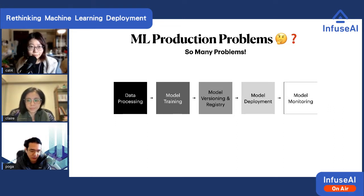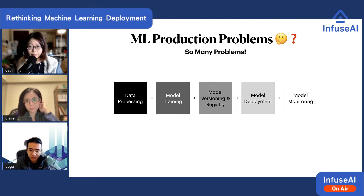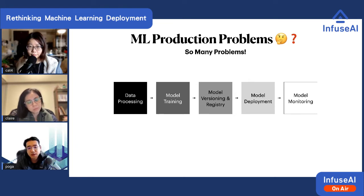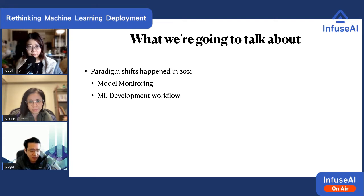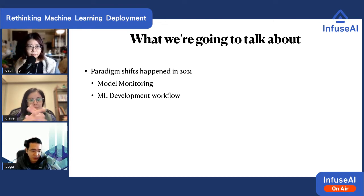Finally, you need to do monitoring — just like every other software service in the real world, you need to make sure the service is still running correctly, efficiently, and that scalability is correct. If anything happens, you need to react quickly. Every single stage in this pipeline could be a one-hour talk, but today we're going to focus on two things we've learned a lot about in 2021, because we finally got a lot of real-world deployments happening. The two points are model monitoring and model development workflow.